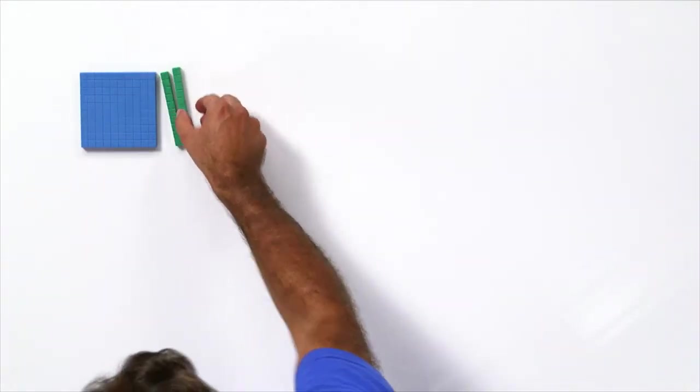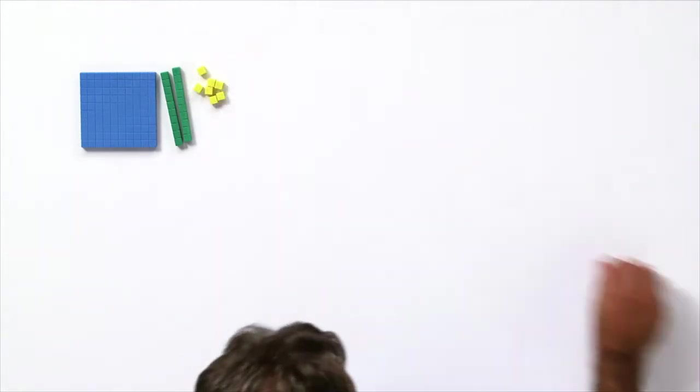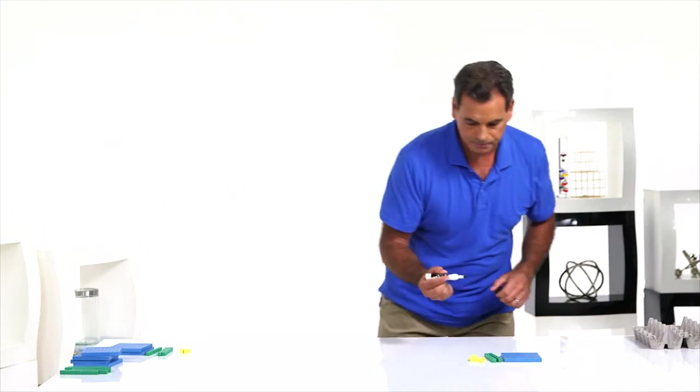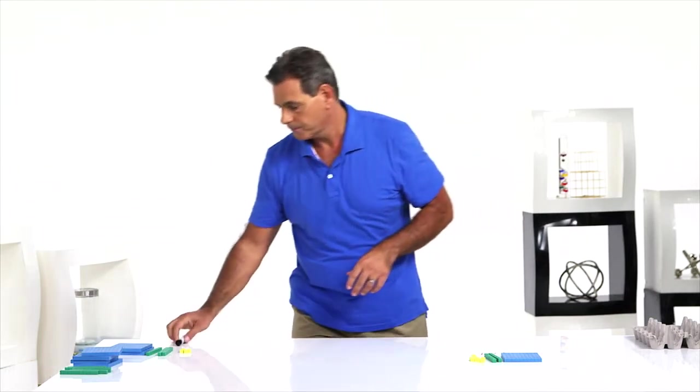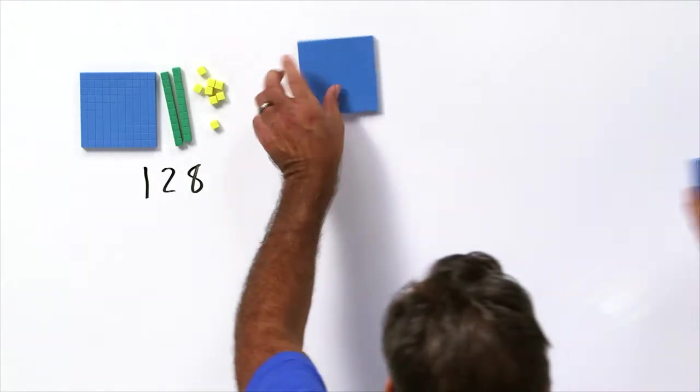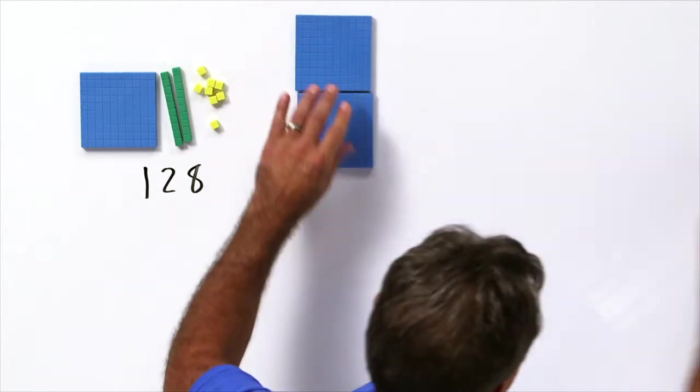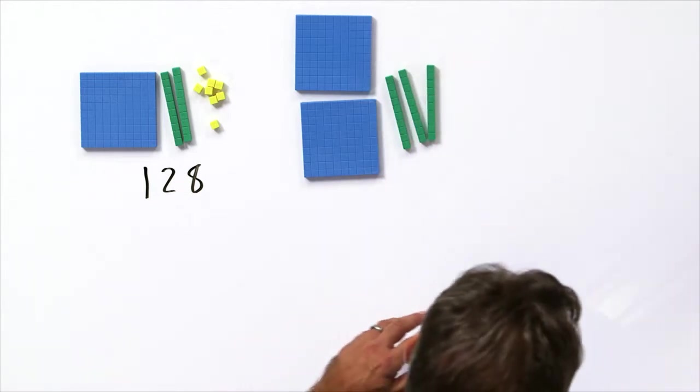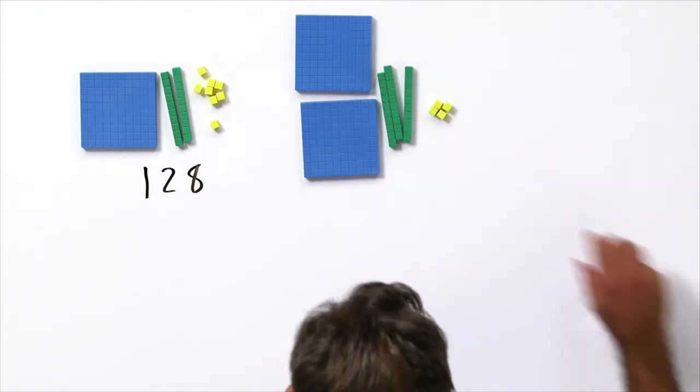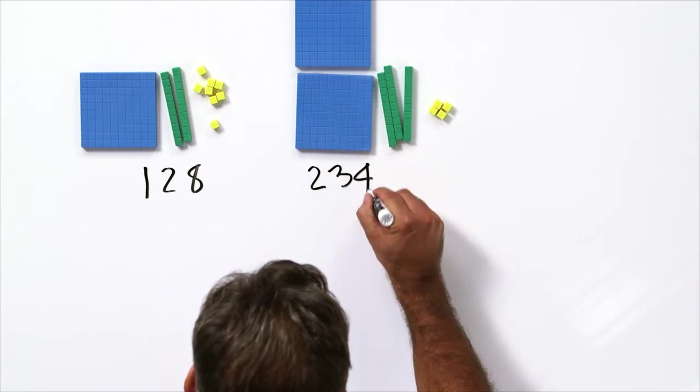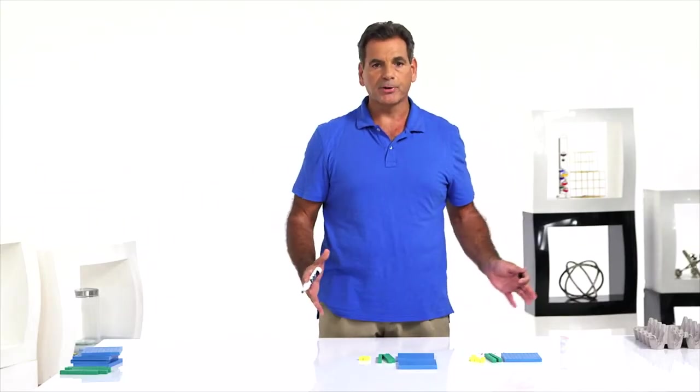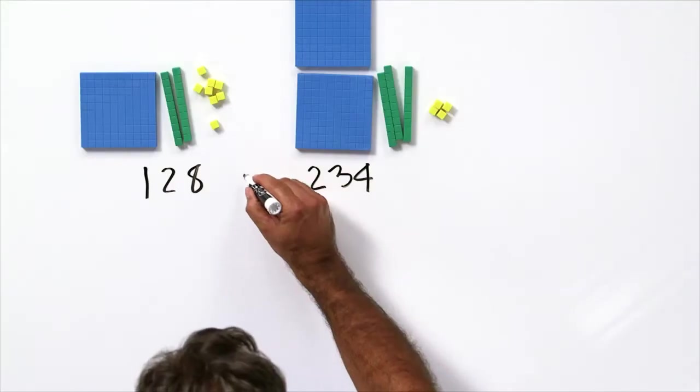Let's look at adding a multi-digit number using base 10 blocks. Have the students build the number 128, and then have them write the number underneath the model. 128. And now we're going to add in the second number. 124. And have the students write that number. 124.